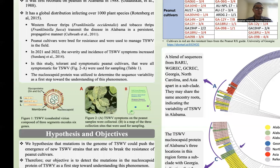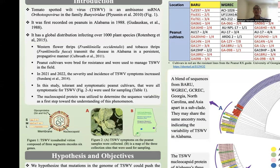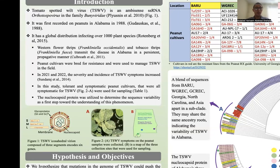This virus has a global distribution and is able to infect over 1,000 plant species from 70 different plant families, which is why it is ranked as one of the top 10 most important viruses worldwide. The virus is transmitted by thrips. In Alabama, two major species transmit it: the western flower thrips, Frankliniella occidentalis, and the tobacco thrips, Frankliniella fusca. Thrips generally transmit orthotospoviruses in a persistent propagative manner — persistent means the virus is transmitted throughout their entire lifespan, and propagative means the virus circulates through the whole insect system and replicates inside the vector without causing any harm to the thrips.